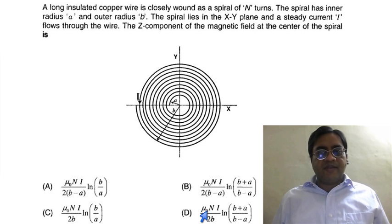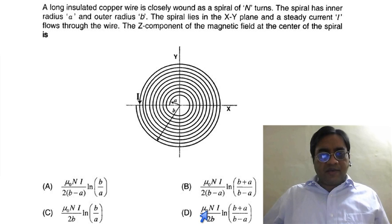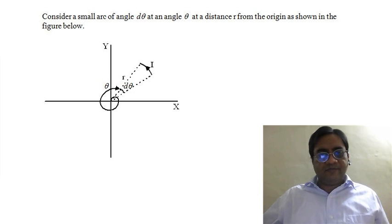We start by considering a small arc of radius r at some angle theta as shown here. This is small arc, this is angle theta, this small angle is dθ, this radius is r.